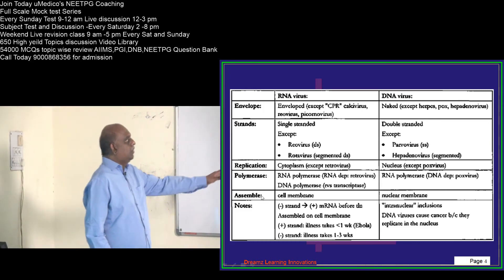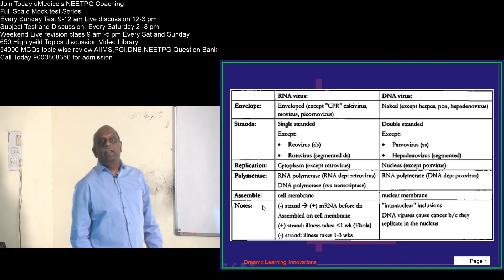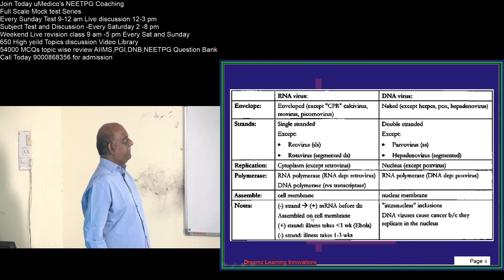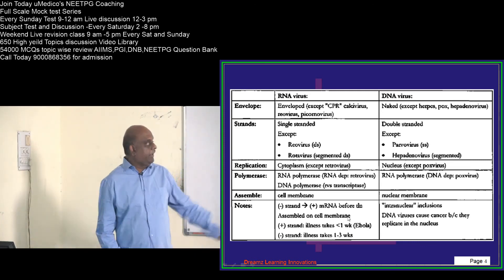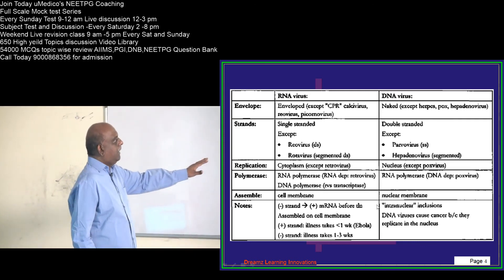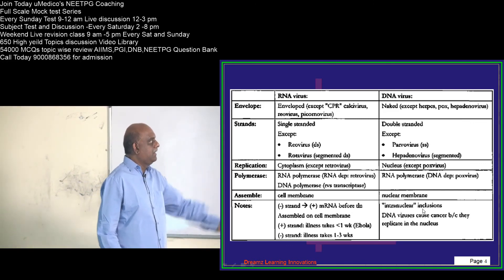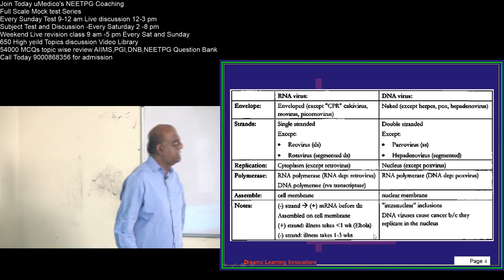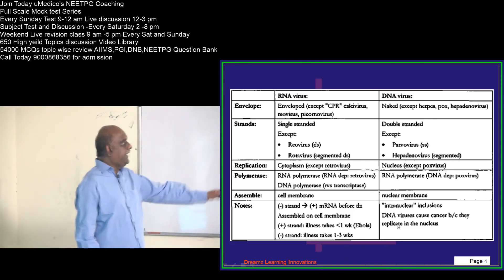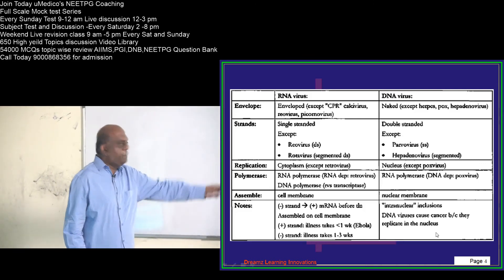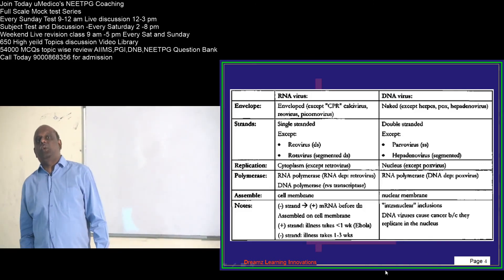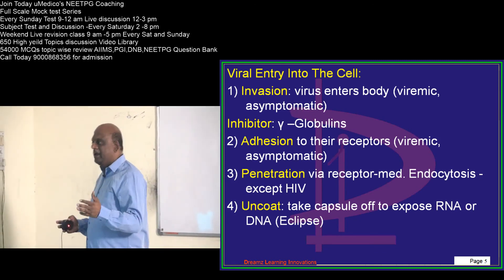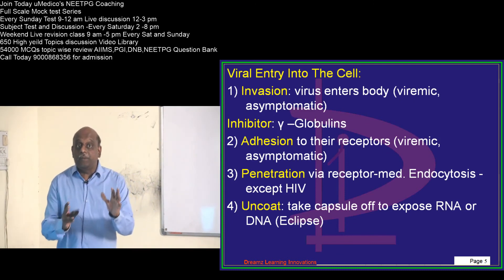How does assembling occur? In RNA virus it's at the cell membrane, whereas DNA virus it's at the nuclear membrane. If you look at DNA virus, you have intranuclear inclusions which are seen in DNA virus, and the DNA viruses which cause cancer replicate in the nucleus. So DNA versus RNA virus - the differences, what are the exceptions.